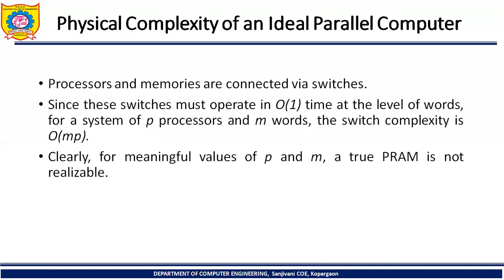Regarding the physical complexity of an ideal parallel computer: processors and memory are connected via switches. Since these switches must operate in O(1) time at the level of words, for a system of P processors and M words, the switch complexity is O(MP). Clearly, for meaningful values of P and M, a true PRAM is not feasible.